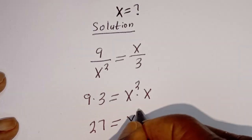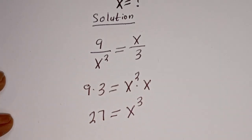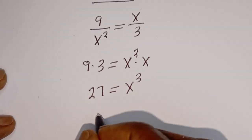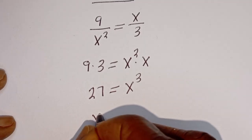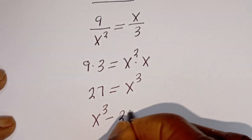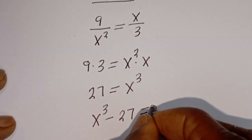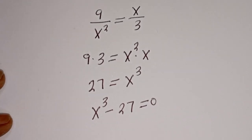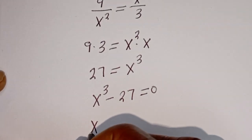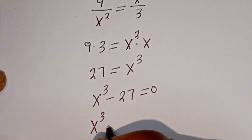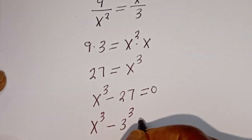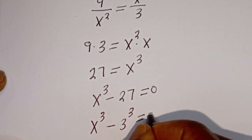This is s to the power of 3. Then this can be written as s to the power of 3 minus 27 is equal to 0. Here we have s to the power of 3, and 27 can be written as 3 to the power of 3, so s³ minus 3³ is equal to 0.